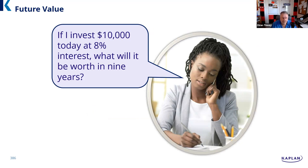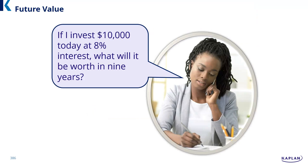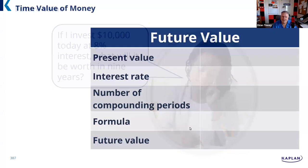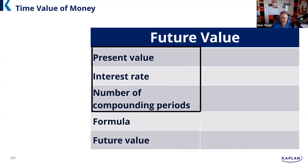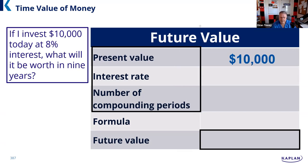Here it says: future value equals the present value times one plus the assumed rate of return to the power of the number of compounding periods. The point is: if we assume a certain rate of return and we get better than that, we'll reach our financial destination sooner. If we get less, we get there later. Here's an example: if I invest $10,000 today at 8% interest, what will it be worth in nine years? The inputs are $10,000 today, 8%, and nine years as the compounding time period.